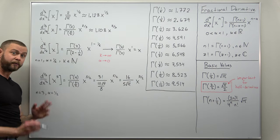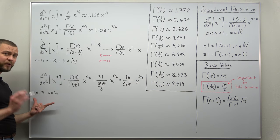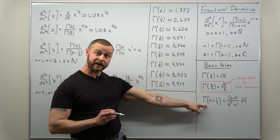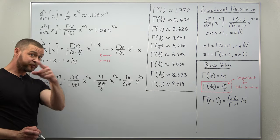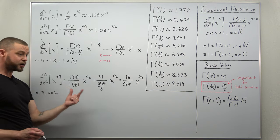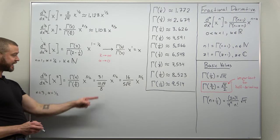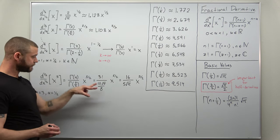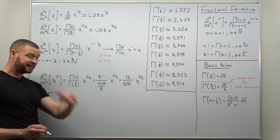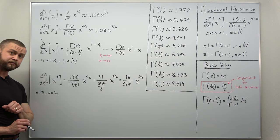Another example: the half-derivative of x³. Here n=3 and α=1/2. We need Γ(7/2), which can be computed using the iterative property of the gamma function — covered in the previous gamma function video. Using n=3 and noting 3! in the numerator, we get x^(3−1/2) = x^(5/2). Working through the gamma function values and simplifying, the result is (16/(5√π)) · x^(5/2) as the half-derivative of x³.